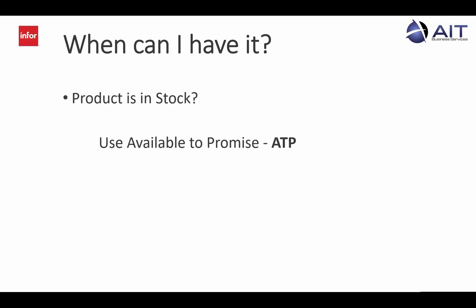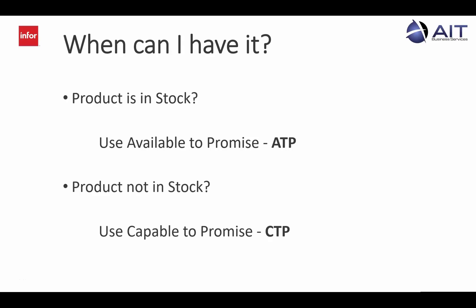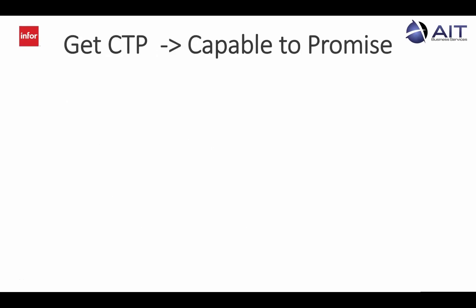If the requested product is in stock, CSI simply uses the available to promise quantity, or ATP for short. But what about when you don't have the finished product in stock?